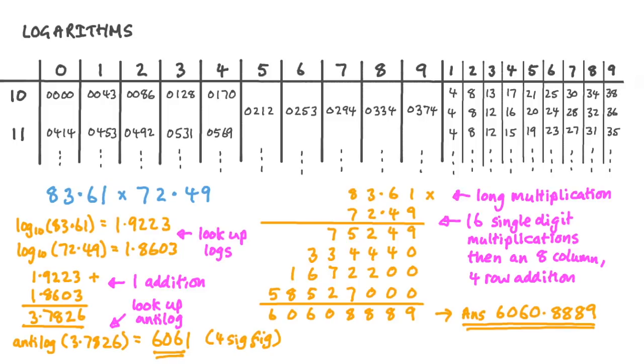For example, to multiply two large numbers together, rather than carrying out a huge long multiplication calculation, they would look up the logarithms of their numbers in a book of log tables, add them together, then convert the answer back to a regular number using anti-log tables. And they could also carry out division calculations by subtracting the logarithms. It saved a lot of time over long multiplication.